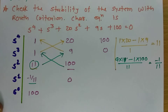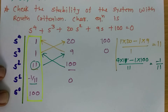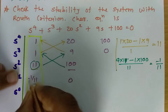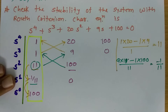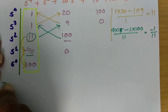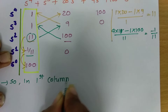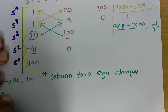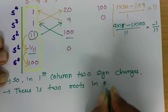For stability, we examine the first column of the Routh matrix and identify sign changes. From 1 to 1: both positive. From 1 to 11: both positive. From 11 to −1/11: one sign change. From −1/11 to 100: second sign change. Two sign changes are occurring in the first column, so two roots are in the right half plane.